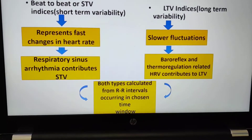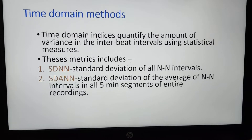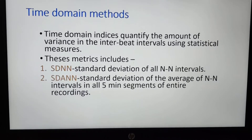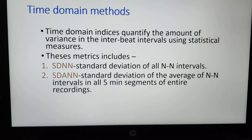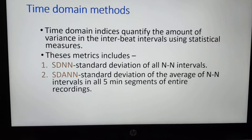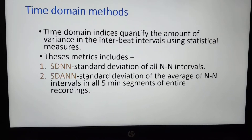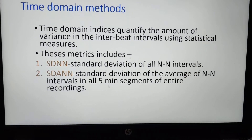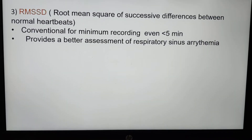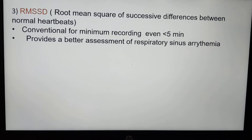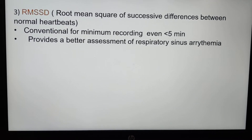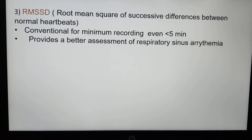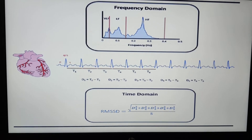The time domain methods include different metrics. The first parameter is SDNN, which is the standard deviation of all NN intervals. The second is SDANN, which is the standard deviation of averages of NN intervals, where NN is the normal beat-to-beat interval in 5-minute segments of the entire recording. RMSSD is the root mean square of successive differences between normal heartbeats, conventional for minimal recordings even less than 5 minutes, and provides a better assessment of respiratory sinus arrhythmia.